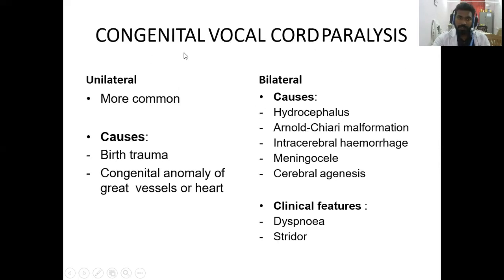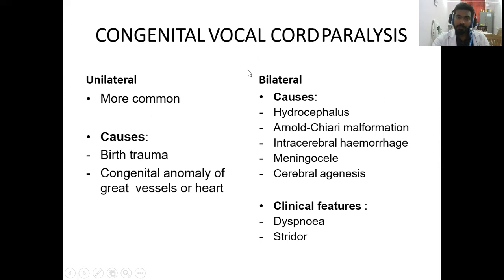Congenital vocal cord palsy can be unilateral or bilateral — unilateral is more common. Causes of unilateral include birth trauma and congenital anomaly of the great vessels of the heart. Bilateral causes include hydrocephalus, Arnold-Chiari malformation, intracerebral hemorrhage, and cerebral agenesis. Bilateral cases are mostly central — lesions in the brain causing bilateral vocal cord palsy congenitally. Clinical features include stridor and dyspnea.